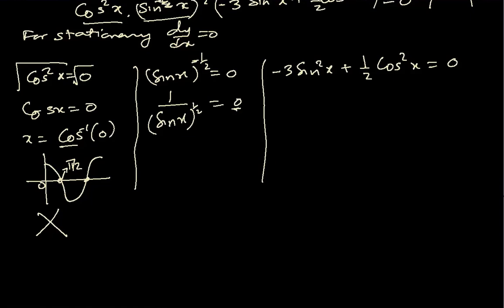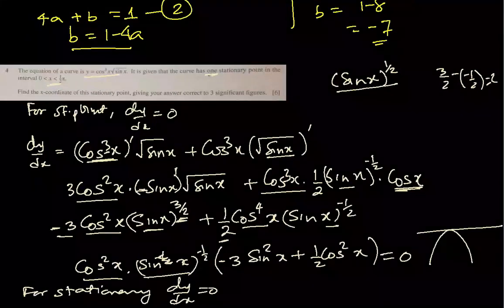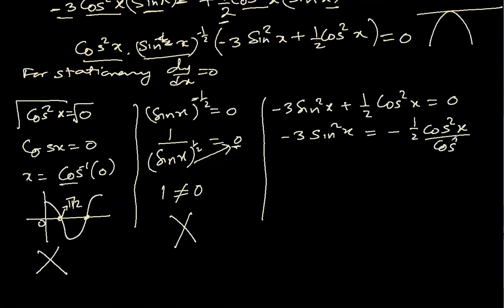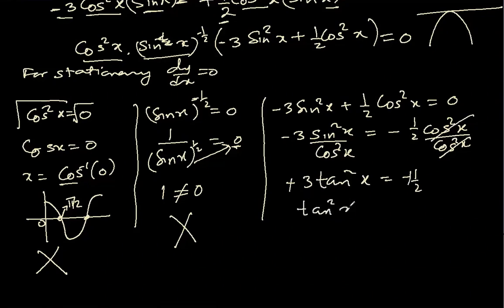You know, question itself they said there is only one stationary point and we have to find x coordinate of that. This will give us 3 sin²x equal to -1/2 cos²x. This is how we can rearrange. Divide both sides by cos²x. This becomes -3 tan²x equal to 1/2. Both are negative so we can cancel negative signs. tan²x equal to 1/6.